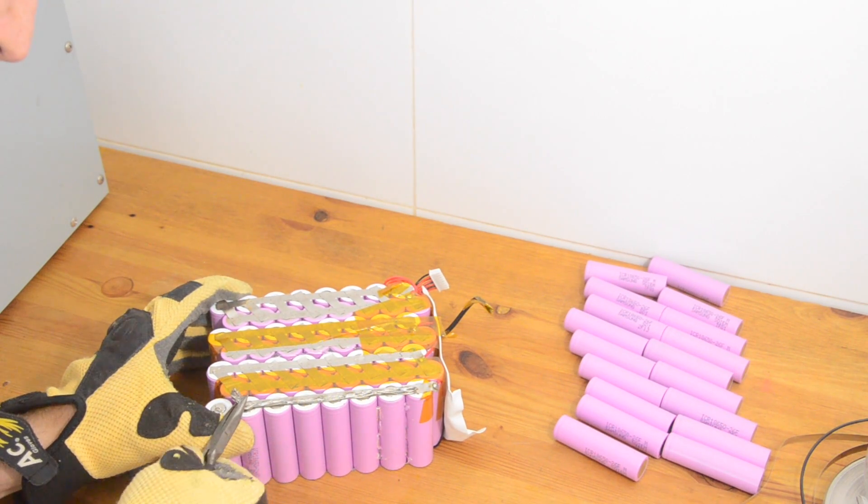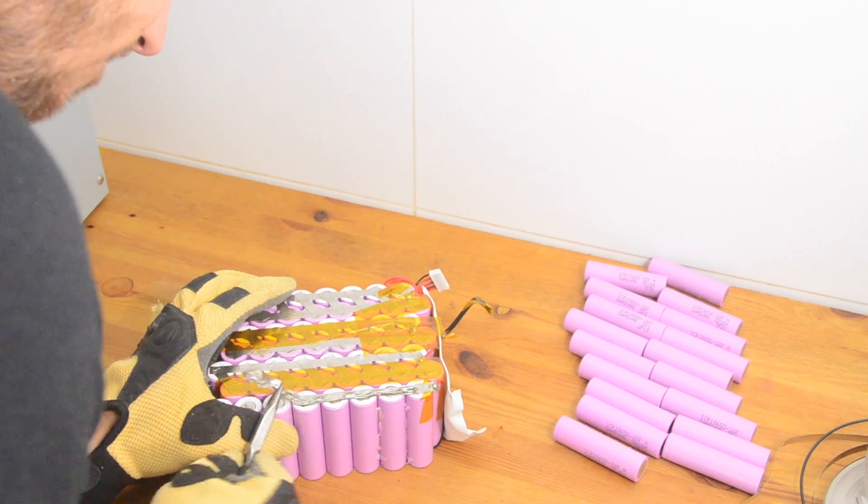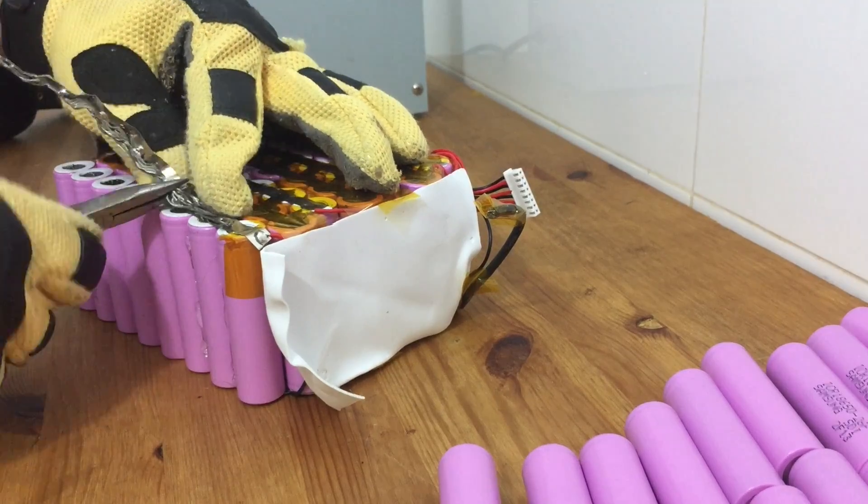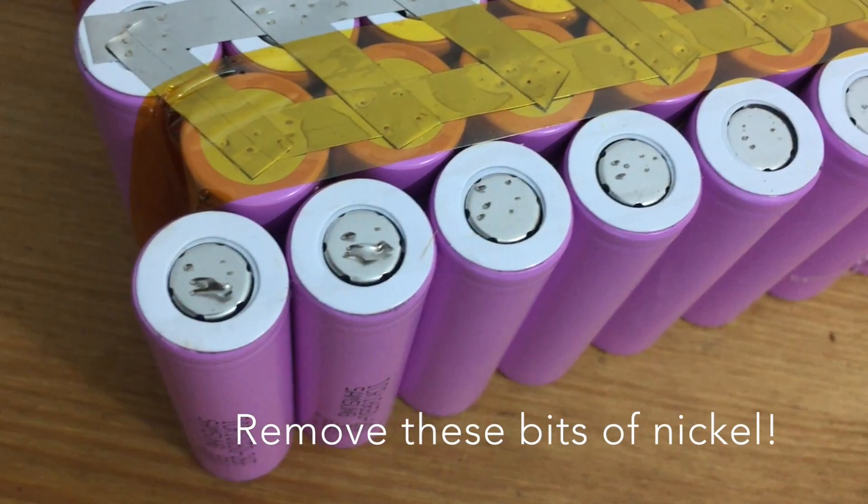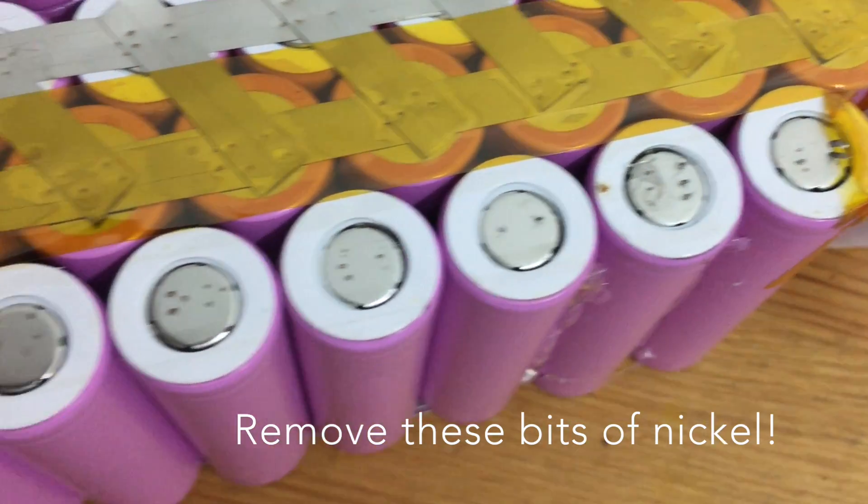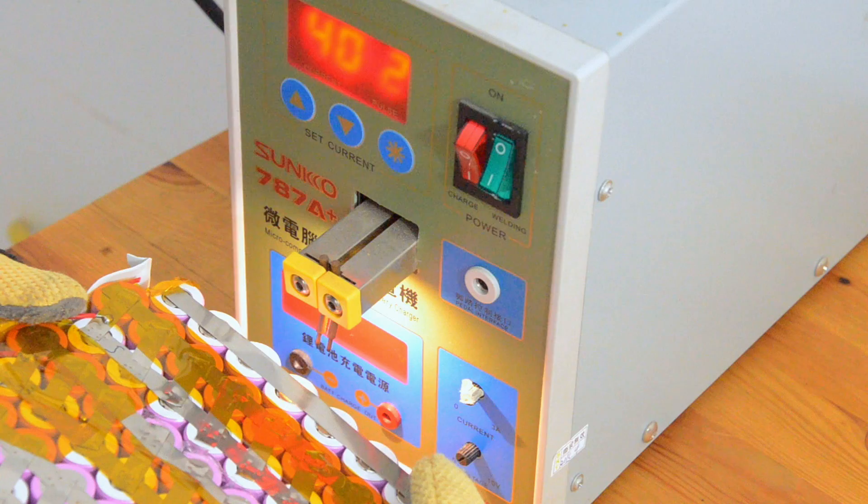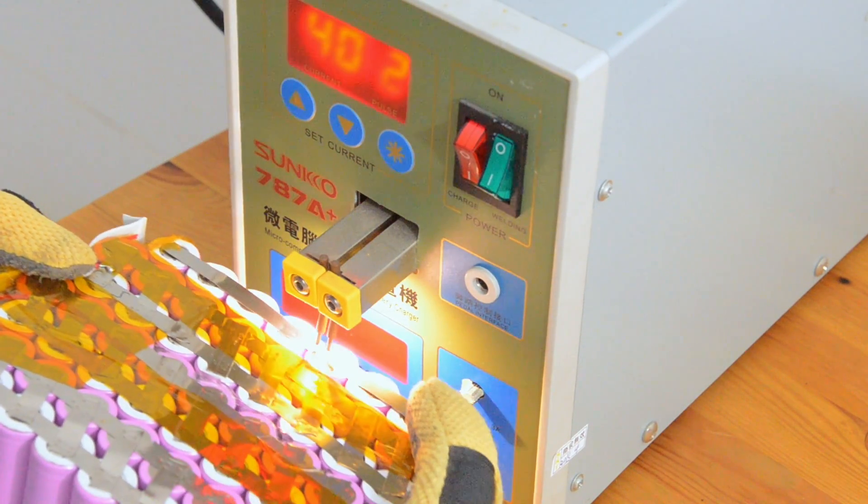Now I'm going to remove the old nickel strip from the positive end of the seventh cell group where we had that old big discharge wire. Now you want to be careful when you do this. And if you have little remnants of nickel strip left on the ends of the cells, you want to make sure you remove those before you go forward. And now I'm just going to replace that old piece of nickel strip that we pulled off with a nice new clean piece of nickel strip.